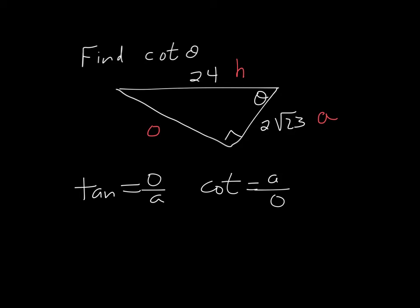So it's going to be, I'm going to just call this x right here. So it's going to be x squared plus 2 square root of 23 squared equals 24 squared.